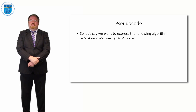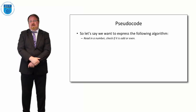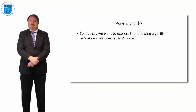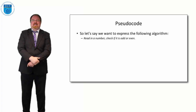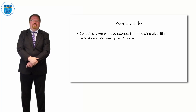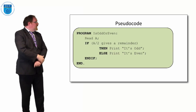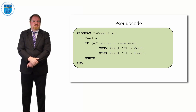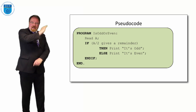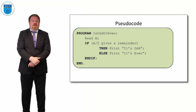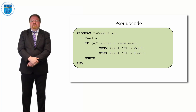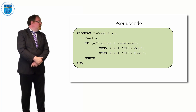Let's say we want to read in a number and check if it's odd or even. An even number is one that divides evenly into two and gives no remainder; an odd number divided by two gives a remainder. For example, 6 divided by 2 gives 3 with no remainder; 7 divided by 2 goes three times with remainder 1. In pseudocode, we declare the program name as 'is odd or even' in camel case, then read in a value a, and then: if a divided by two gives a remainder then print the number is odd, else print the number is even, endif.